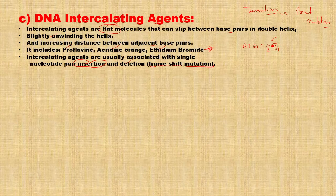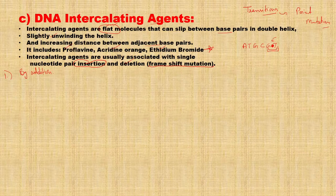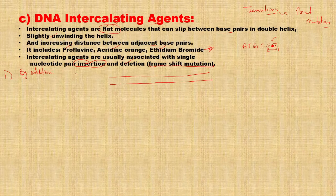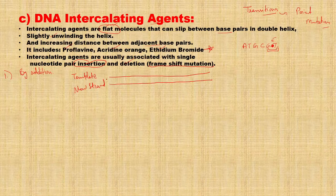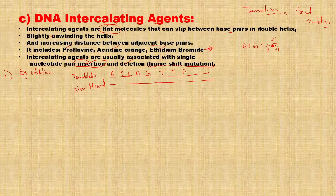First, we will discuss frameshift mutation by addition. We take a double helical DNA strand: a template strand, and in front of it a newly formed strand. Randomly, we have taken some nitrogenous bases on the template strand: A, T, C, A, G, T, T, A, C, T. The complementary new strand reads: A, A, T, A, A, T, C, A, T, A.